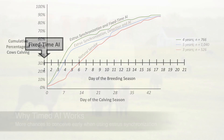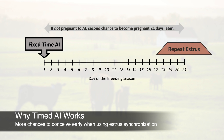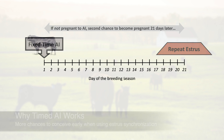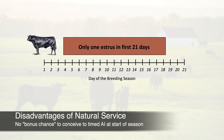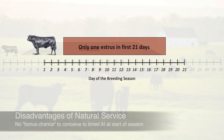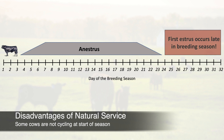Why? Well, when using timed AI, all of the cows are given an opportunity to conceive on the first day of the breeding season. And if they fail to become pregnant, they have a second opportunity when they cycle back around day 21. In a natural service system, cycling cows only have one chance to conceive in the first 21 days of the breeding season, and not all cows are cycling when the breeding season starts — so some cows don't even have their first chance until late in the breeding season.